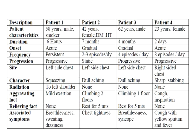Patient one is a 58-year-old male smoker who presents with chest pain for six hours. Onset is acute, persistently present, and progressively increasing in intensity. The pain is localized to the left side of the chest, squeezing in character, radiates to the left shoulder, aggravated by even mild exertion, with no specific relieving factors. It is associated with breathlessness, sweating, and dizziness. In a high-risk patient with acute progressive chest pain unrelieved at rest and these associated symptoms, this is a typical presentation of acute myocardial infarction.